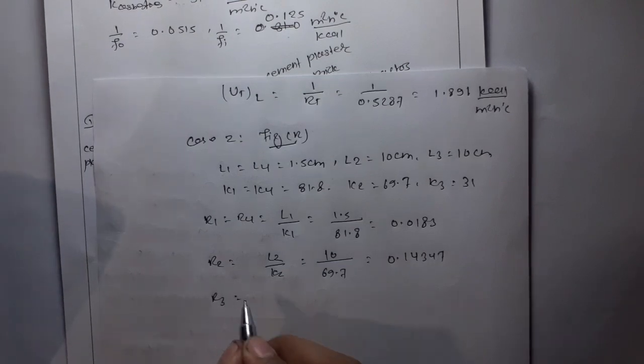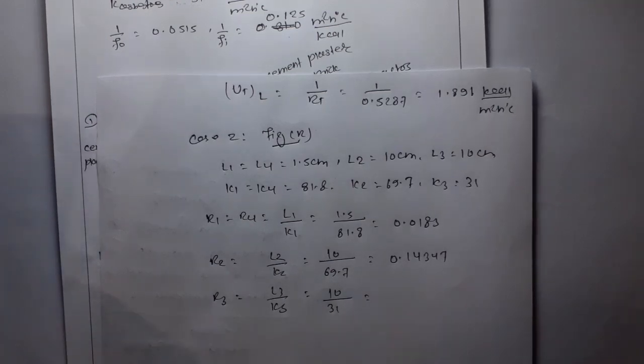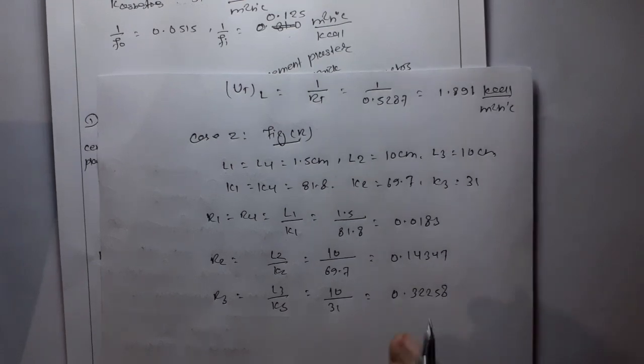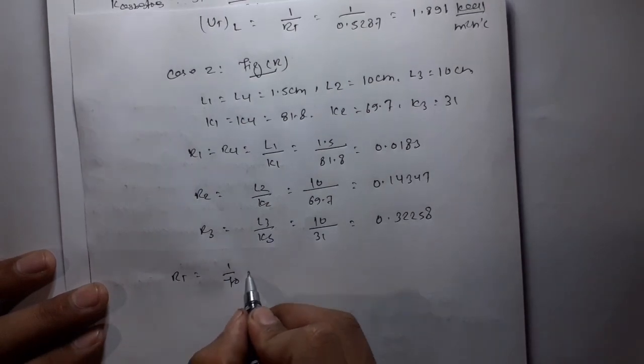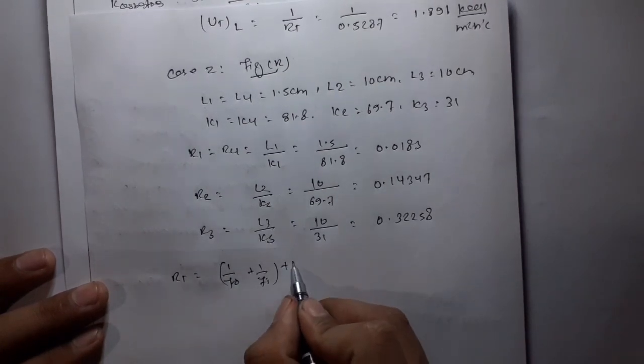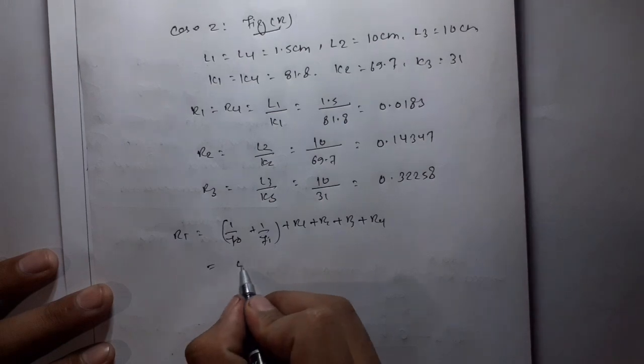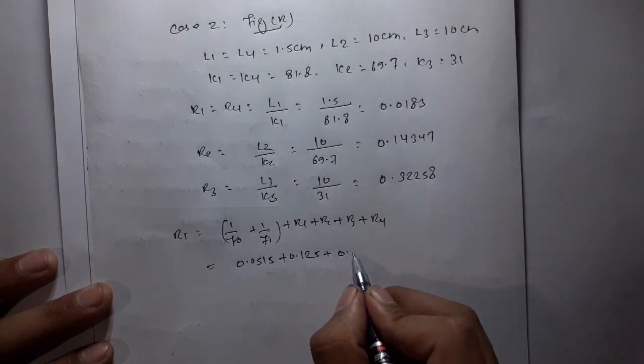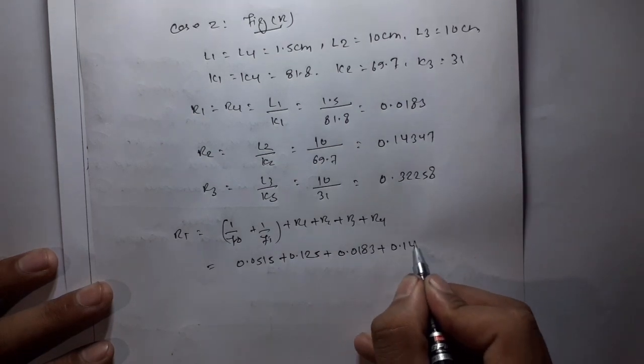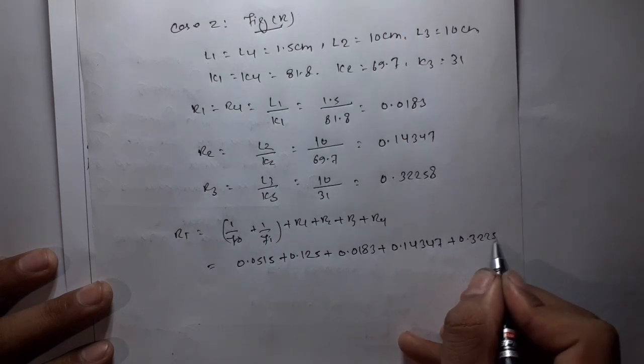R3 equals 0.32258. Total R is one by F net plus one by F I plus R1 plus R2 plus R3 plus R4. 0.0515 plus 0.125 plus 0.0183 plus 0.14347 plus 0.32258 plus 0.0183.